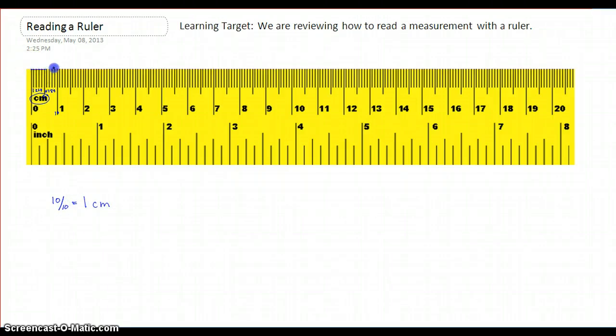So as you draw out a segment, if your segment goes all the way to here, you know that you have a whole number of eight, and then you count one, two, three, four. This would be eight and four tenths. If you want to reduce it, or you should reduce it, this would be eight and two fifths, and this is now centimeters.